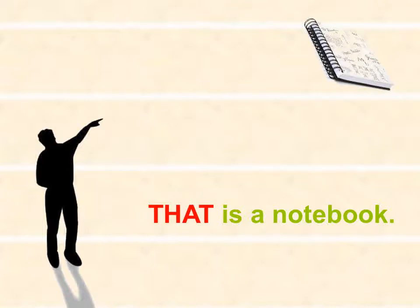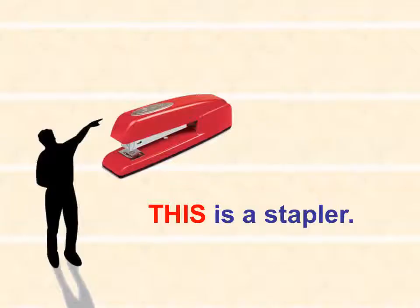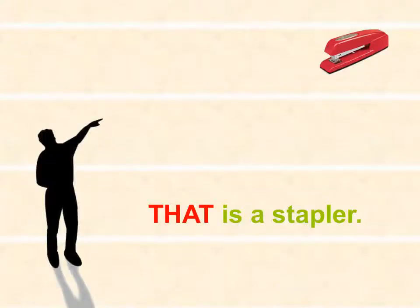Similarly, if we have a stapler and it is near to us, we use this. So what will be the sentence here? This is a stapler. And if the stapler is far from us, we use that. That is a stapler.